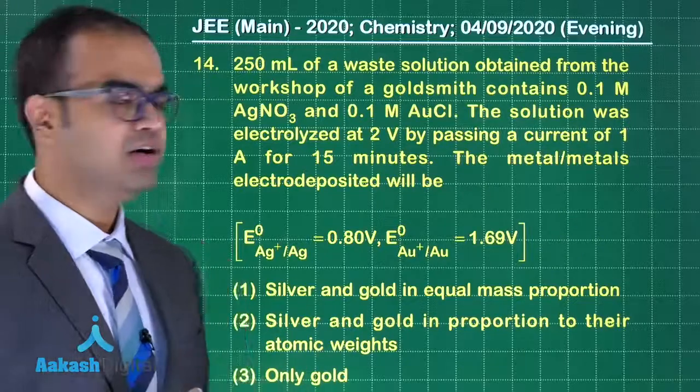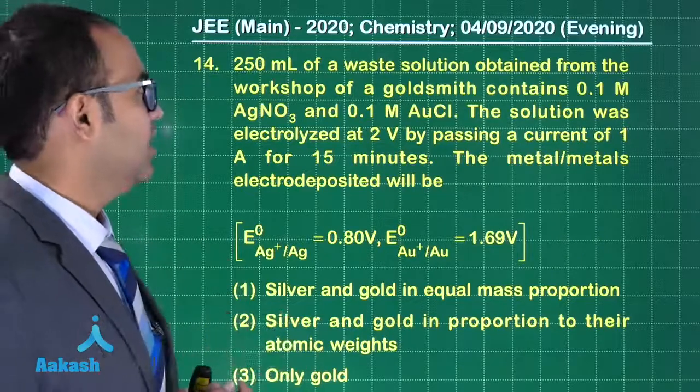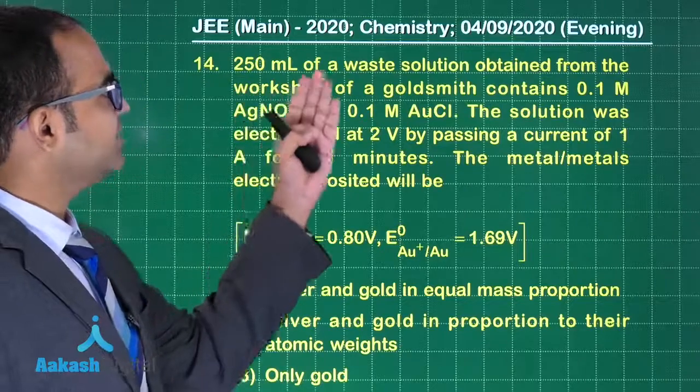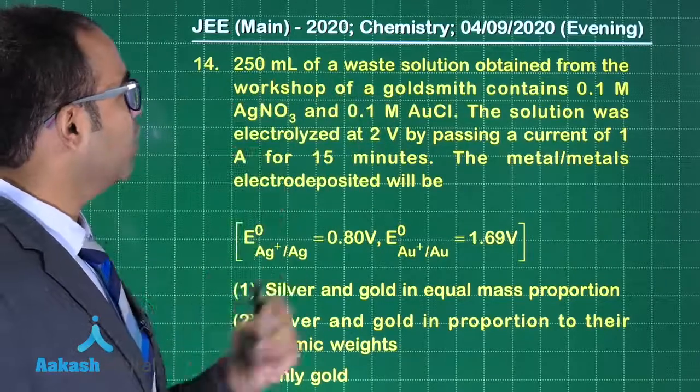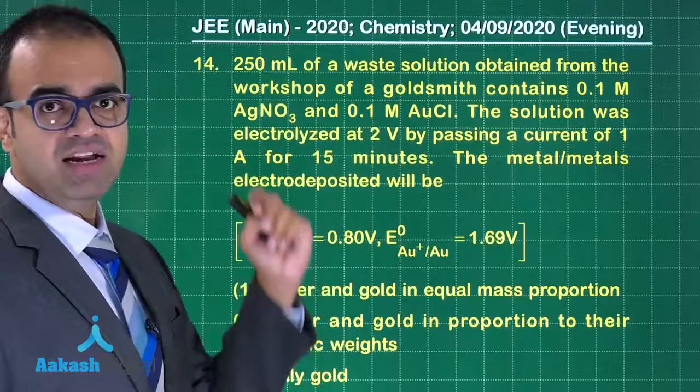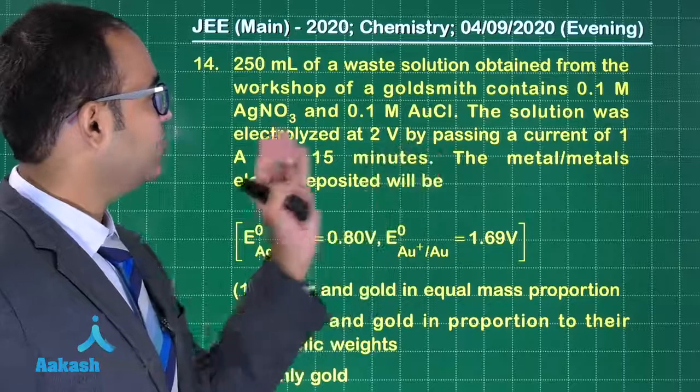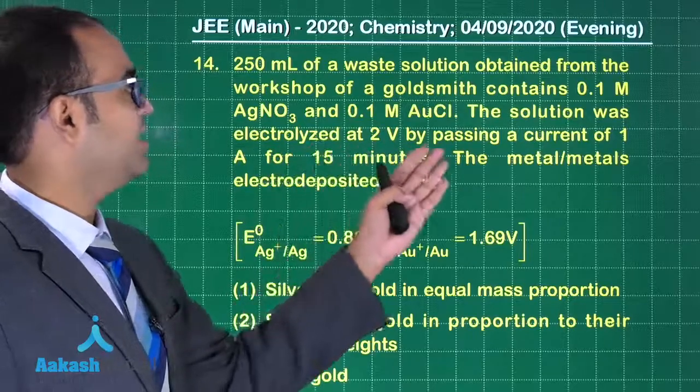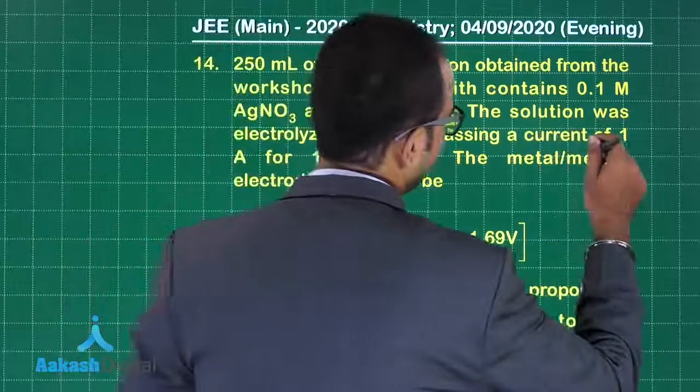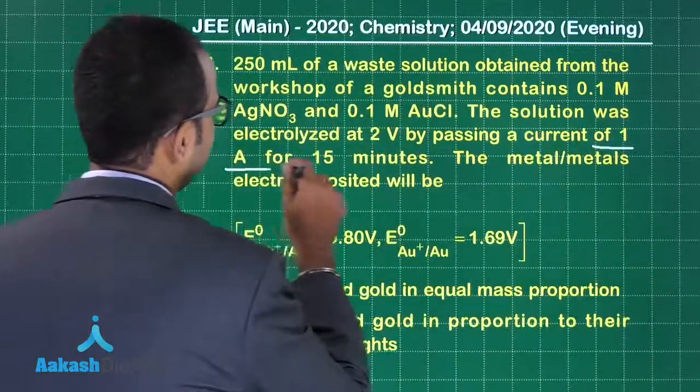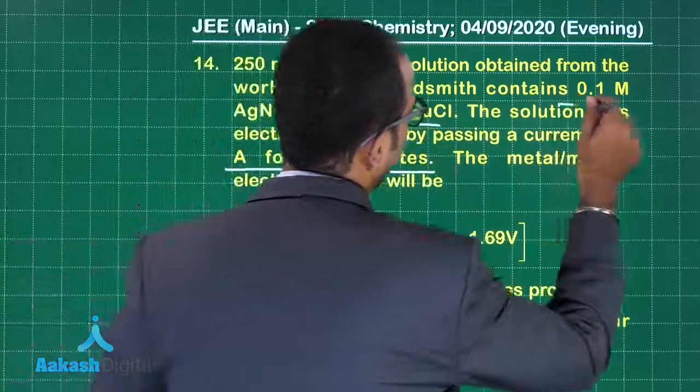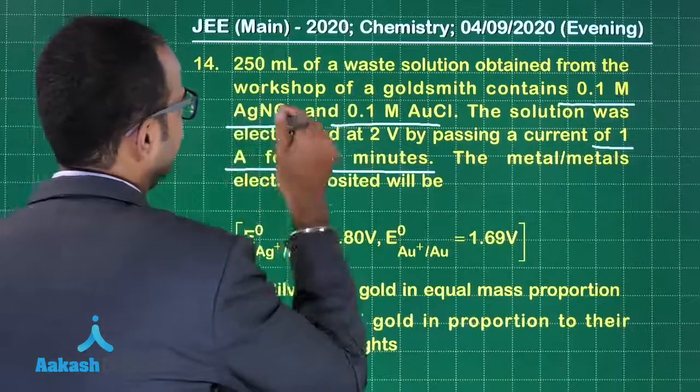Let us solve question number 14 guys. A question from electrochemistry. 250 ml of waste solution obtained from the workshop of a goldsmith contains 0.1 molar AgNO3 and 0.1 molar AuCl. The solution was electrolyzed at 2 volts by passing a current of 1 ampere for 15 minutes.